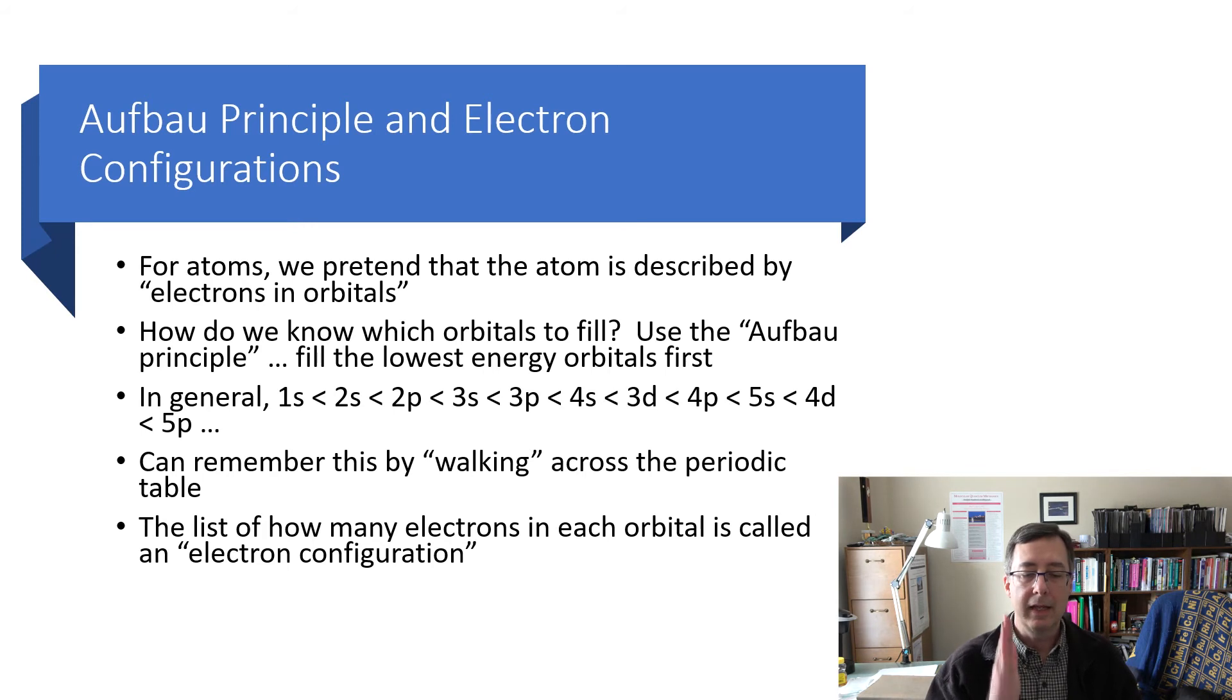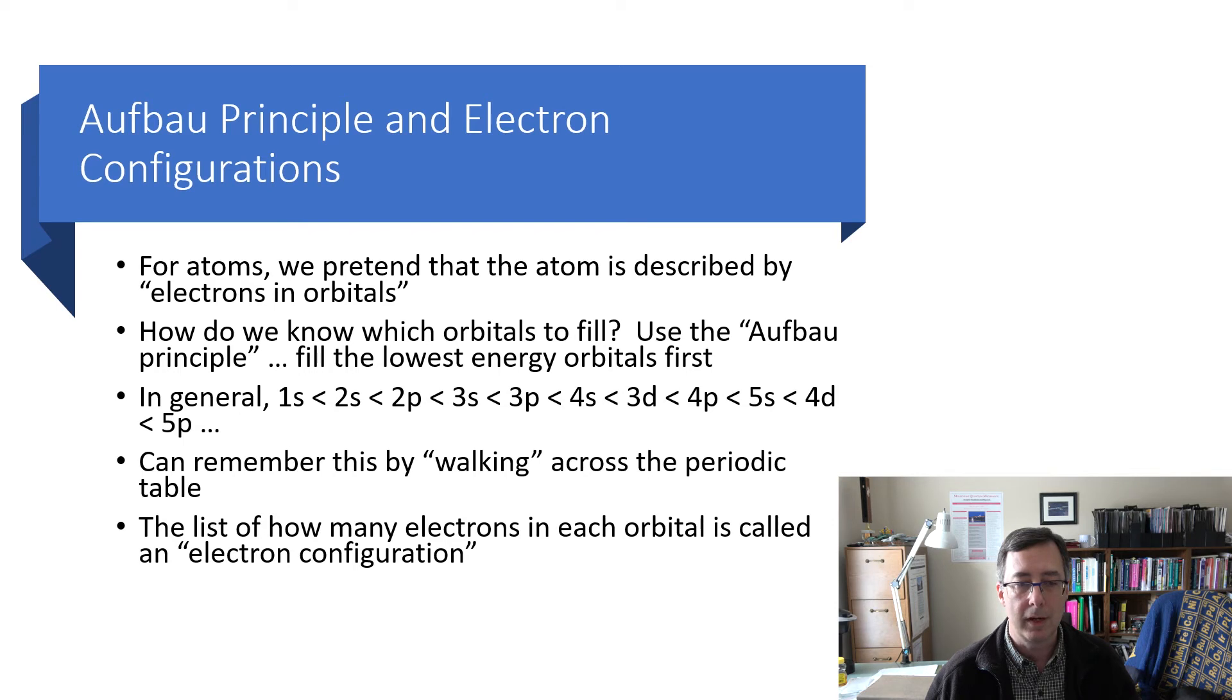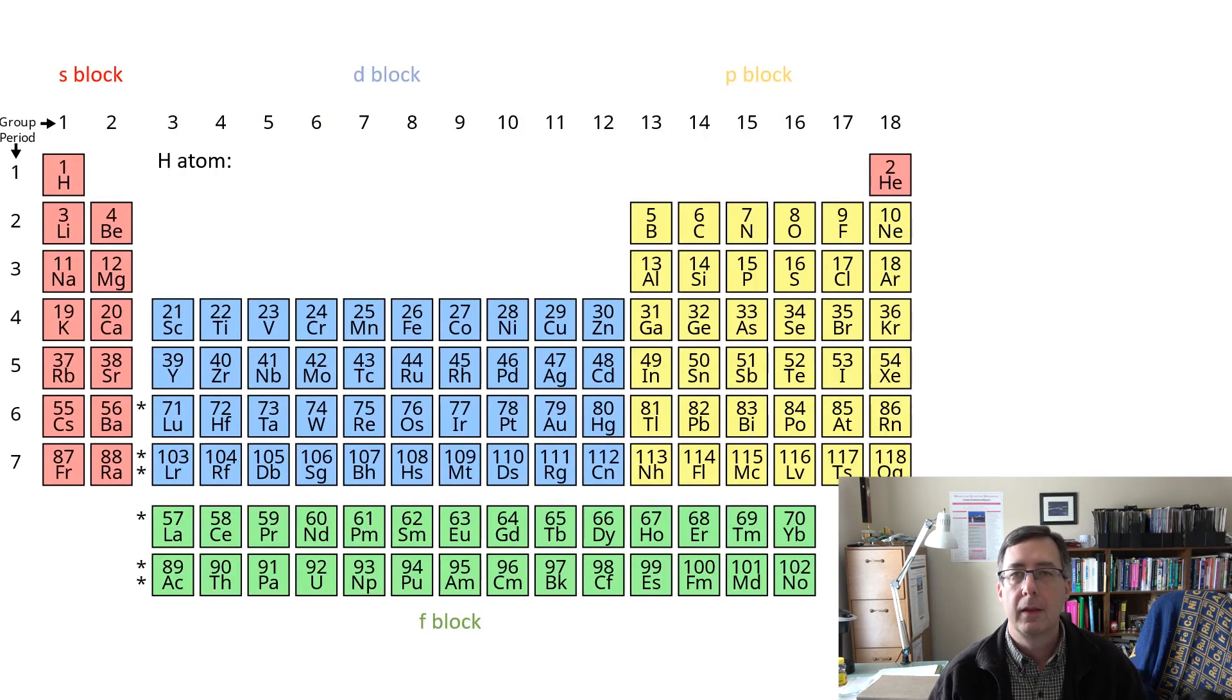It's easy to remember this pattern. You don't have to really memorize this. If you got access to a handy-dandy periodic table and you just sort of walk the periodic table and you understand how the periodic table works, then the periodic table will tell you these rules. So let me explain that to you. Now, if I make a list of how many electrons are in each orbital, that list is called the electron configuration. So I want to do some examples of writing down electron configurations. And finally, I'll also remind you, each spatial orbital, like an s orbital or a 2py orbital, can hold two electrons, one alpha electron, one beta electron. You can't put in two alpha electrons to the same spatial orbital, that would be forbidden by the Pauli principle.